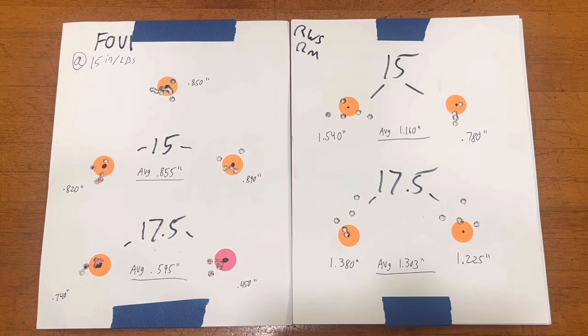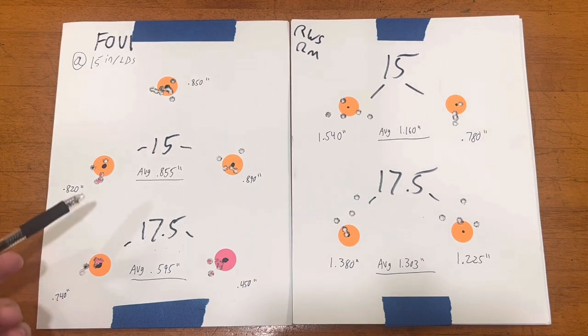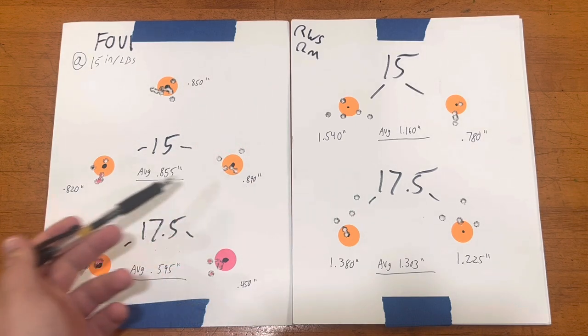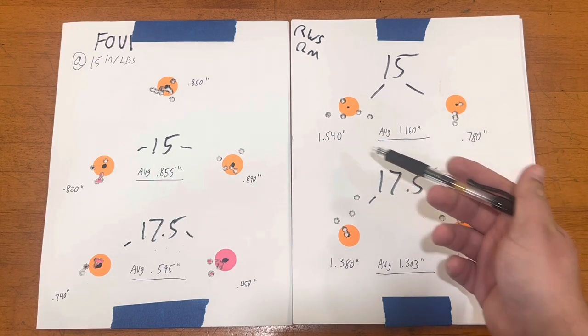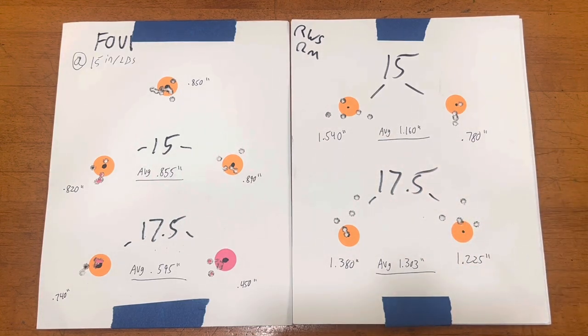Let's move into the 15 inch-pound value here. On the Hogue, as you can see, we shot groups in the 0.8s here at 50 yards. When we moved over to the KRG, it was quite interesting. We shot an inch and a half group and then we shot a 0.7 group, so that was a little bit interesting to see.